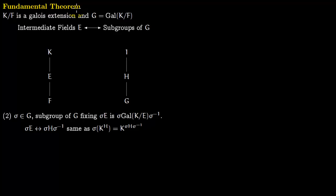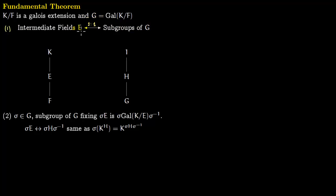Now we discuss the fundamental theorem of Galois theory. Say we are given a Galois extension k over f, and corresponding to it we have the Galois group — the group of automorphisms of k which fix f. The first result is that the intermediate fields e between k and f are in one-to-one correspondence with subgroups of g. This we have already shown in the lecture on Galois correspondence. Pictorially, k corresponds to just the identity map, and corresponding to f the group is g, since g fixes field f.